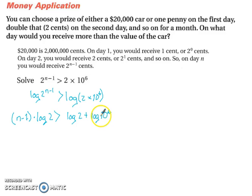Log base 10 of 10, that means your simplified version of this just equates to 6. So change color so it's a little easier to follow. So we have a log base 2, and we're going to divide both sides by that. So now we have n minus 1 must be greater than log 2 plus 6 divided by log of 2.